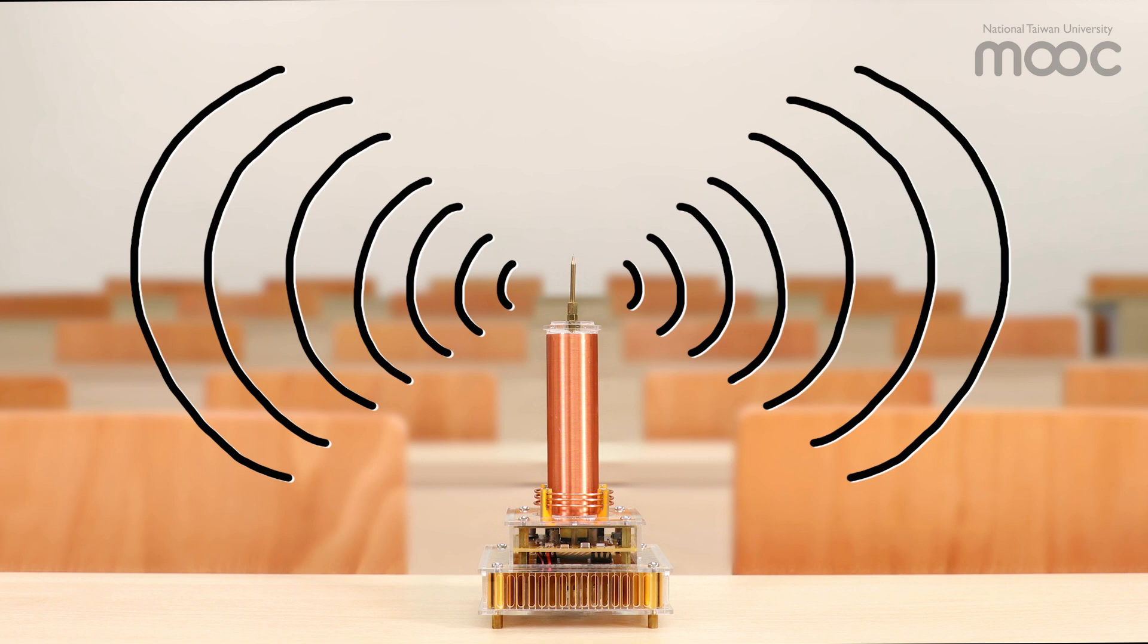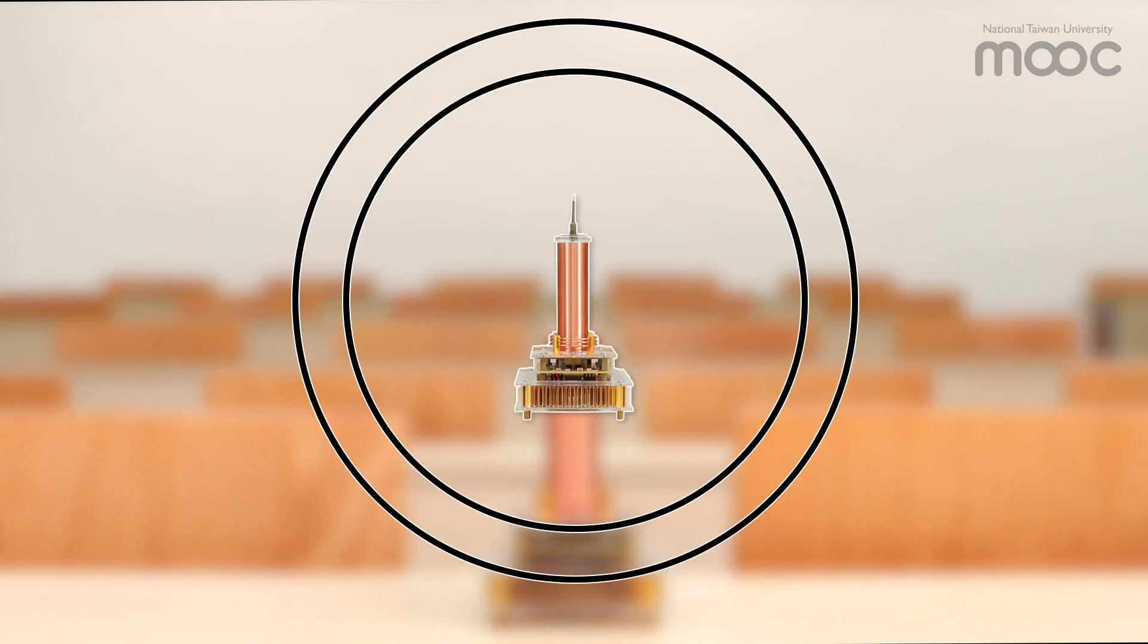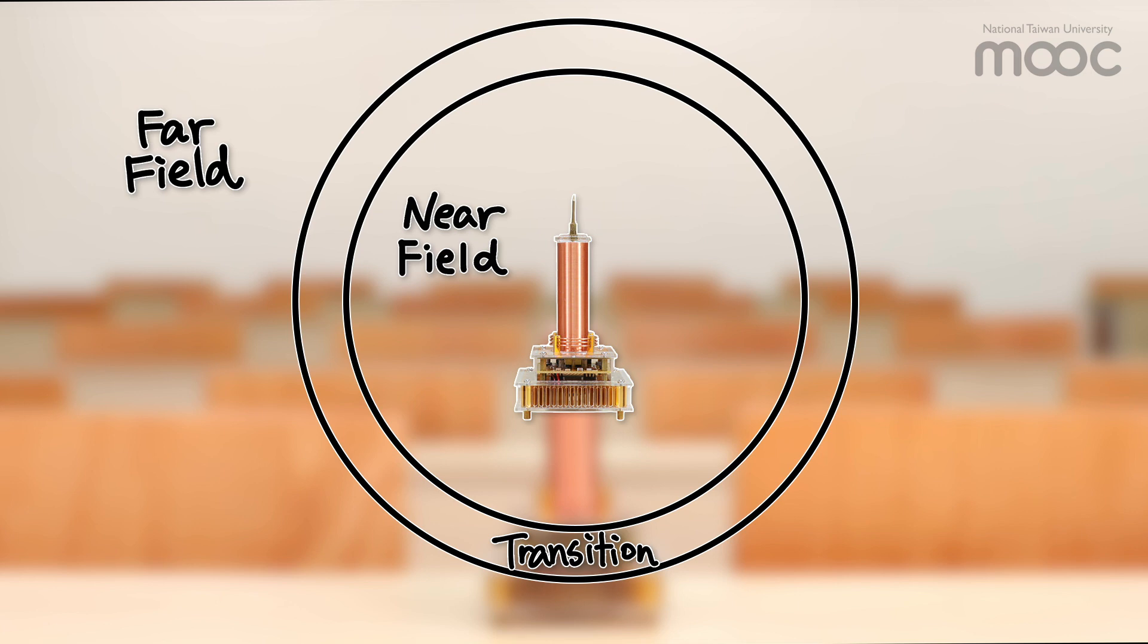The frequency of the radiation is usually designed on the order of megahertz. Since the free space wavelength of megahertz radiation is several meters, our detection devices will be in the near field region when we are operating the Tesla coil in indoor environments.